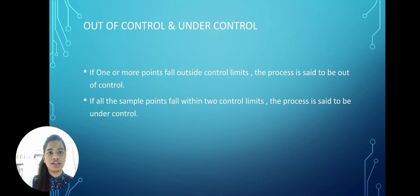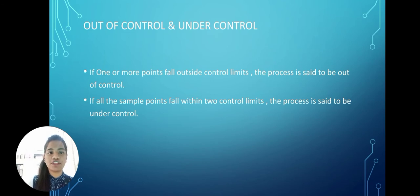If one or more points fall outside the control limits, the process is said to be out of control. This happens because of the presence of assignable causes of variation. If all the sample points fall within the two control limits, the process is said to be under control. This happens because we are removing the assignable causes of variation.